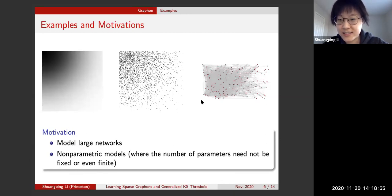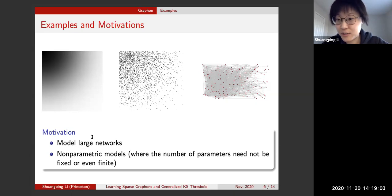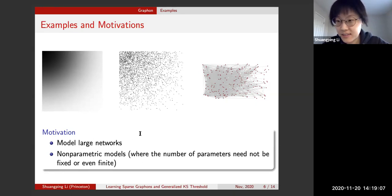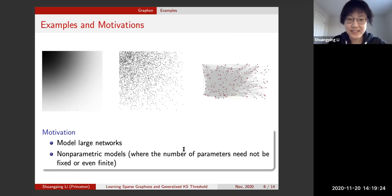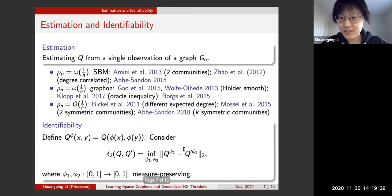More generally, we can use any non-linear function to generate a large variety of graphs. The motivation for the graphon model is that we want to model large networks. Compared to stochastic block models, the graphon is a good non-parametric model where the number of parameters need not be fixed or even finite.